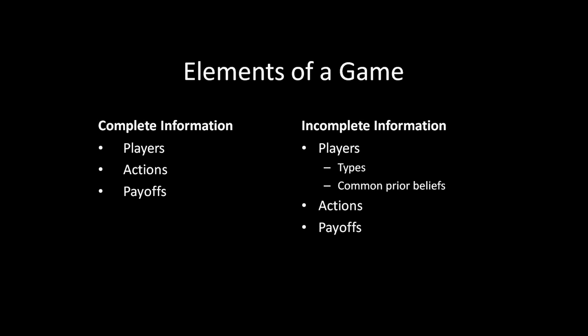In order for the goalie to actually adopt some sort of strategy that's a good response to the different possibilities, we need to have beliefs about the types of players that an opponent is facing. For example, maybe the goalie has a 50% belief that the striker is more accurate to the left side, and a 50% belief that the striker is more accurate to the right side. When we have these games of incomplete information, we usually go a step further and use something known as the common priors assumption.